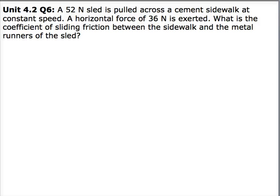This is a question from Unit 4.2, question 6. A 52-Newton sled is pulled across the cement sidewalk at a constant speed. A horizontal force of 36 Newtons is exerted. What is the coefficient of sliding friction between the sidewalk and the metal runners of the sled?